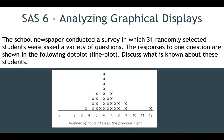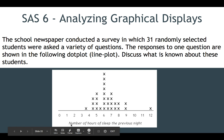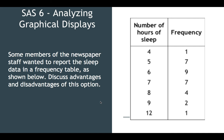The school newspaper conducted a survey in which 31 randomly selected students were asked a variety of questions. The responses to one question are shown in a dot plot or line plot about hours of sleep. This is univariate data — the number of hours of sleep the previous night. One person had 3.5 hours; three had 4.5; four had 5; one had 5.5; eight had 6; three had 6.5; four had 7; two had 7.5; two had 8; two had 9; and one had 12 hours. I don't know who this person with 12 hours of sleep is, but they're obviously doing something right.